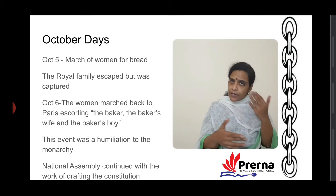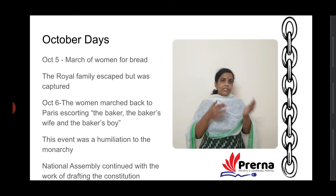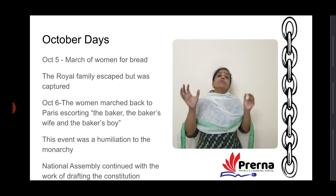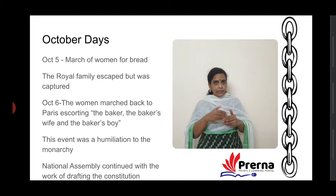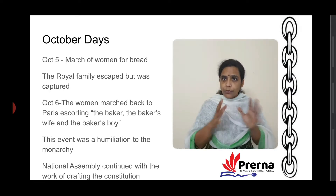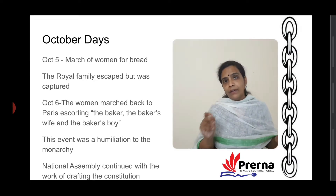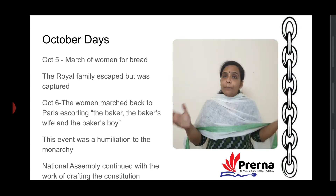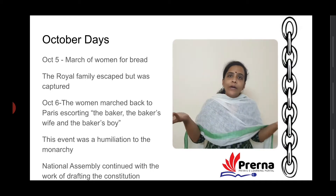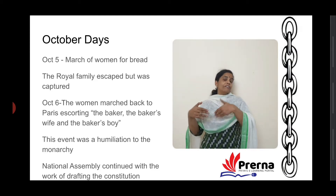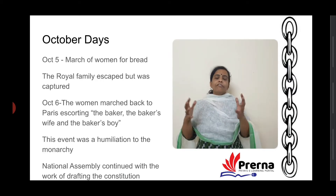After that, on October 5th, the March of Women for bread took place. Then what happened — the royal family tried to escape from these people, but they were captured and brought back. On October 6th, the women marched back to the palace chanting, 'We have the baker, the baker's wife, and the baker's little boy. Now we have bread.' This was in fact a humiliation to the monarchy.